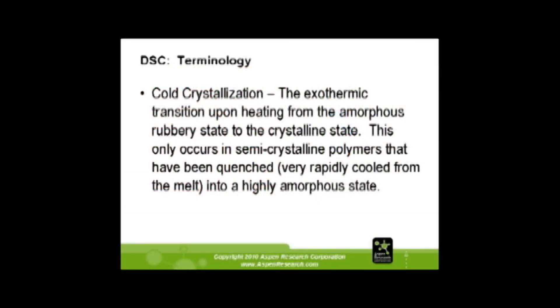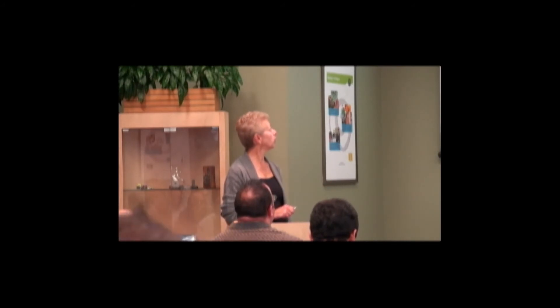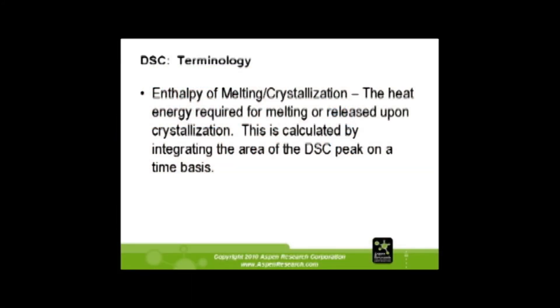A few more definitions. Cold crystallization — we don't see this very often. It occurs when you're heating from the amorphous rubbery state and somebody very rapidly quenches a sample, giving you a highly amorphous state. During the heating curve, you get a cold crystallization. The sample has to release some heat before the actual melt can happen. I've seen this on polyester — they do it quite often. Enthalpy is the heat energy absorbed during melting or released upon crystallization. This is calculated by integrating the area under the DSC curve, and the heat underneath the curve is called heat of fusion.